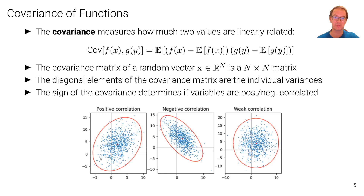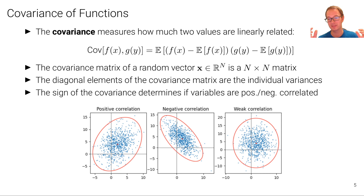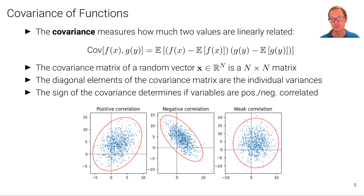We can read off from the off-diagonal element how the two random variables are correlated. These are all Gaussian distributions but with different covariance matrices, where the off-diagonal element is either positive, negative, or weakly positive. If it's positive, we see positive correlation — larger values of x also yield larger values of y. If the off-diagonal element is negative, we have negative correlation where larger values of x imply smaller values of y. And in the near-zero case, the covariance between x and y is close to zero, meaning almost no correlation.